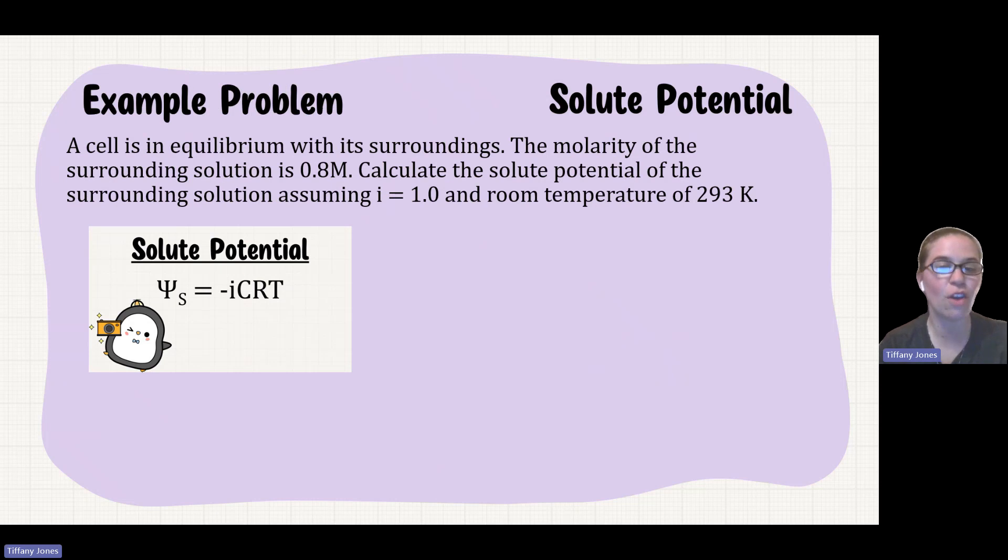Pause the video and see if you can solve this problem. A cell is in equilibrium with its surroundings. The molarity of the surrounding solution is 0.8 molar. Calculate the solute potential of the surrounding solution, assuming i is equal to 1 and room temperature is 293 Kelvin.